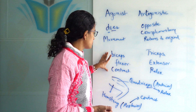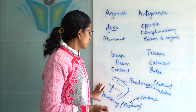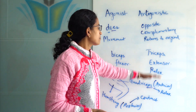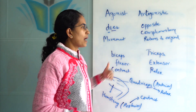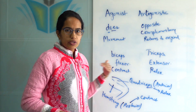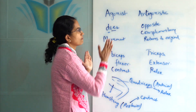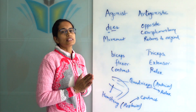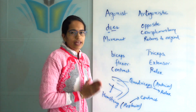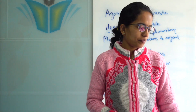So here the biceps does the movement, and here the hamstring does the movement, while the relaxer muscle brings it back to the original position. A very important difference between antagonistic muscles and agonist muscles, along with examples for the same.